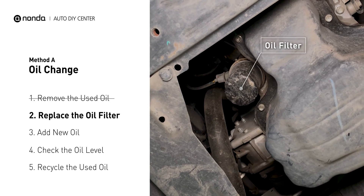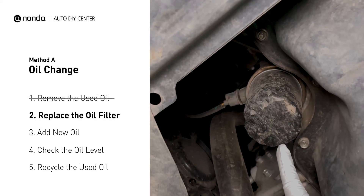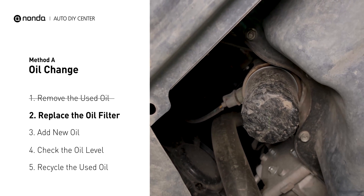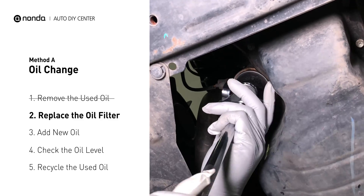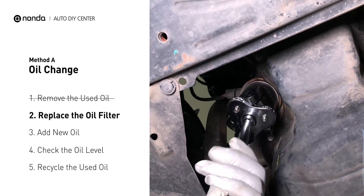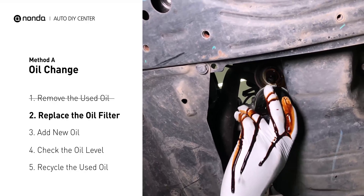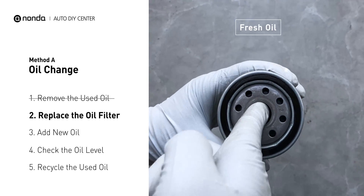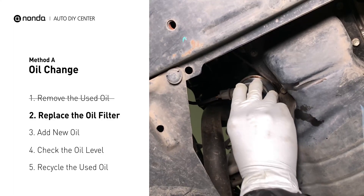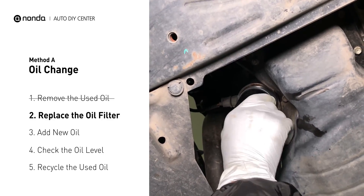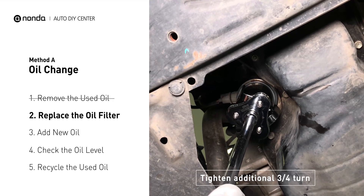The oil filter is usually located beside the oil pan or under the hood of your vehicle near the engine. Place the collection pan under the filter. There would be oil in the filter itself that could be hot, so it is important that the oil goes into the collection pan. Spread a bit of fresh oil evenly on the new filter's gasket, then install the new oil filter. Tighten the filter an additional three quarters of a turn — be sure not to over tighten.